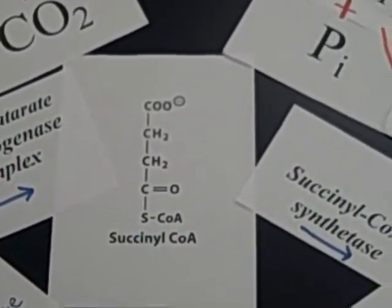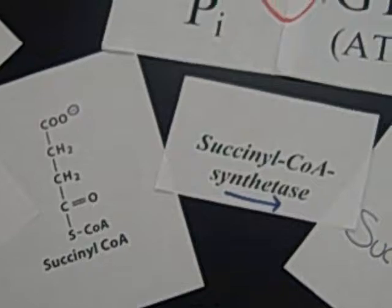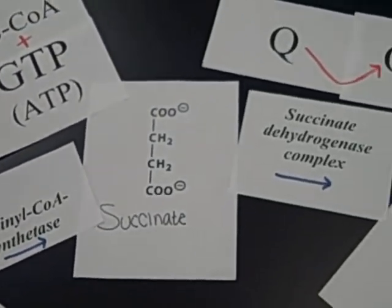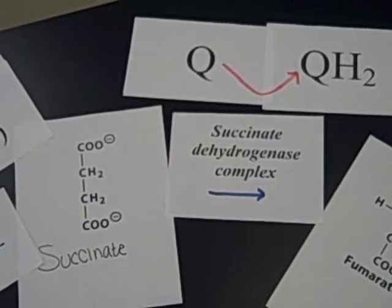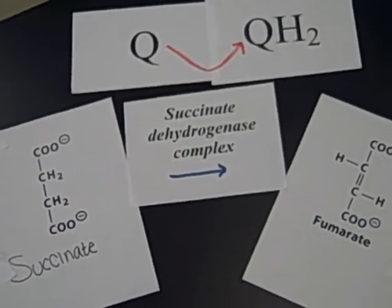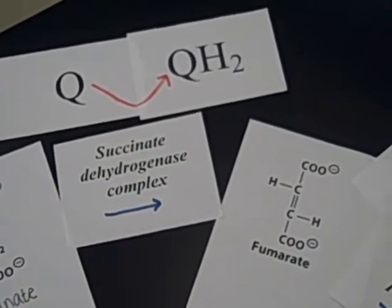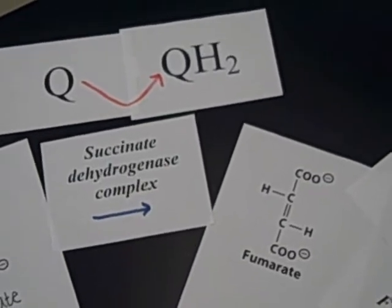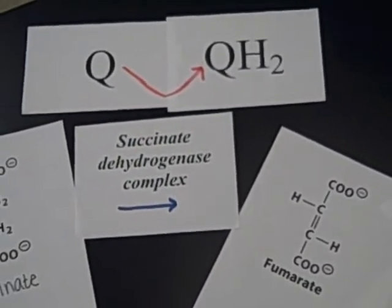The succinyl-CoA is changed into succinate by succinyl-CoA synthase. This reaction produces one ATP or GTP and also one CoA. The succinate dehydrogenase complex will change the succinate into fumarate and also it will reduce coenzyme Q so that it can move forward in reactions.